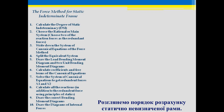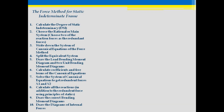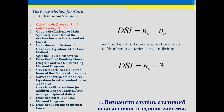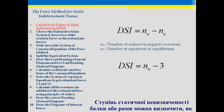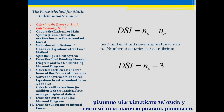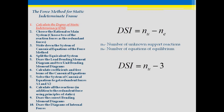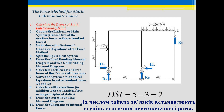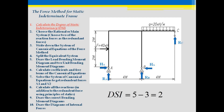Let's look at the recommended procedure for analysis of a statically indeterminate frame. First, we must calculate the degree of static indeterminacy. For beams and frames, static indeterminacy is defined as the number of unknown support reactions minus the number of equations of equilibrium. For a two-dimensional structure, there are three equations of equilibrium, and static indeterminacy refers to the number of reactions unsolvable using basic statics.